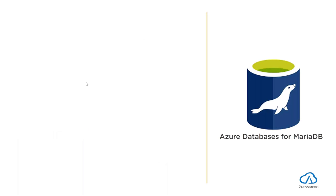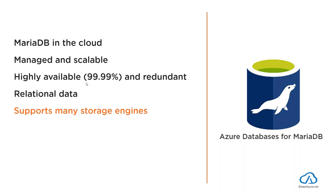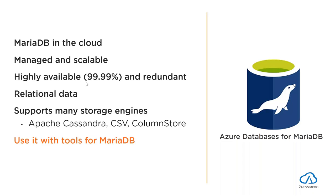Azure Database for PostgreSQL is managed, scalable, and highly available, storing relational data. It's flexible — you can write functions in several languages and use PostgreSQL extensions that MySQL and Azure SQL don't have, managed with tools like pgAdmin. Azure Database for MariaDB is also managed and scalable, stores relational data, and uniquely supports many storage engines — including an Apache Cassandra API, CSV, and column store — managed with tools like Database Workbench and SQL Yog.